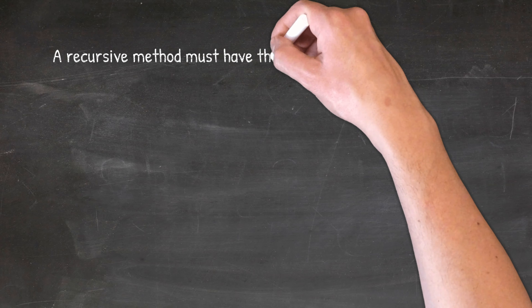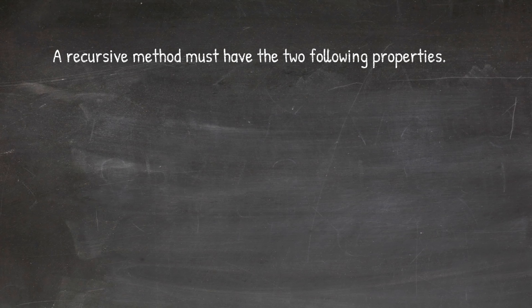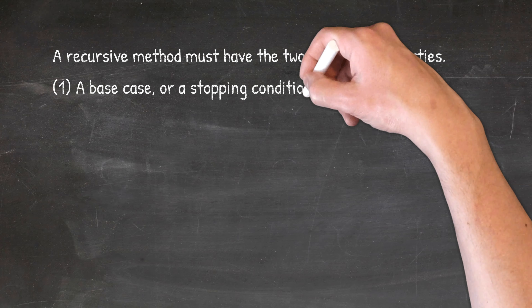A recursive method must have two properties. Number one, a base case or a stopping condition. Of course, we do not want our program to run forever. The recursion, that is the calling of itself, must stop at some point. The condition at which the recursion should stop is called the base case. The base case is generally an easy-to-solve subproblem of the main overarching problem.